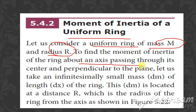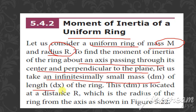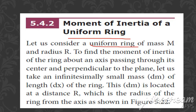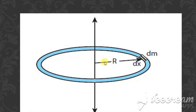To find the moment of inertia about an axis passing through its center and perpendicular to the plane, let us consider a small mass element dm with length dx. Here is the ring with radius R, and dm is the small mass element at distance dx along the ring.